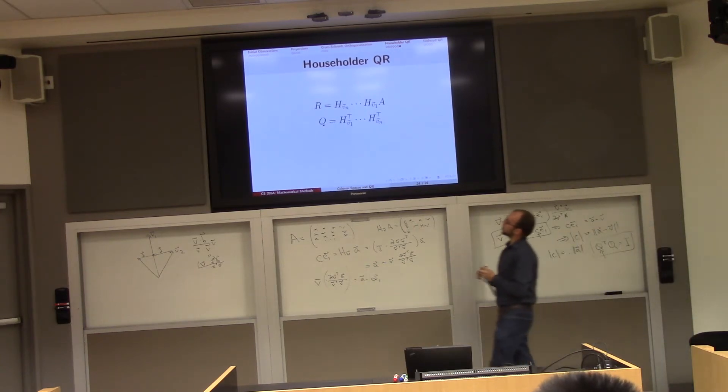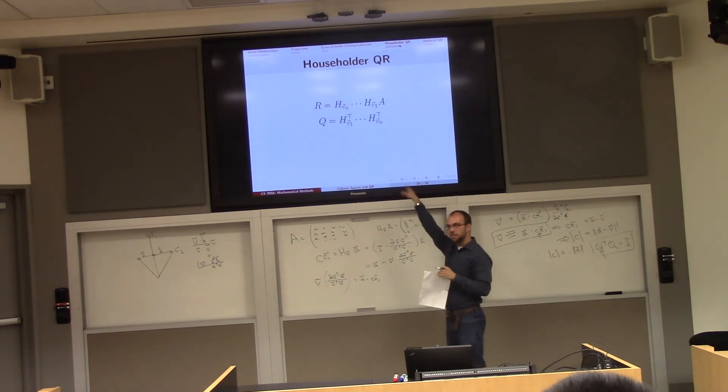So in other words, to get the Q for our QR factorization we just multiply the transposes of all these guys that we looked at. Easy.